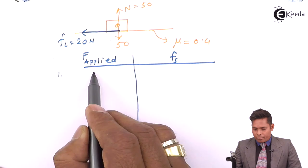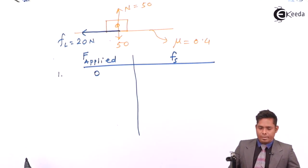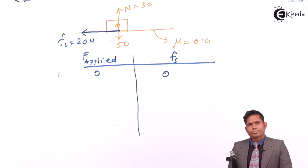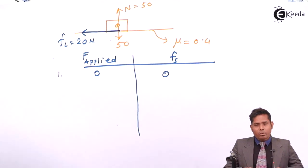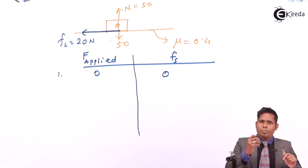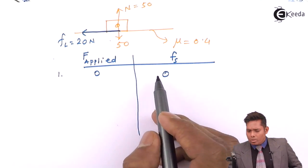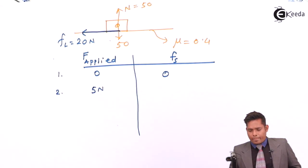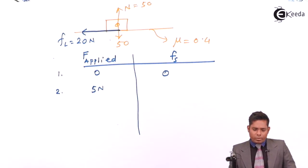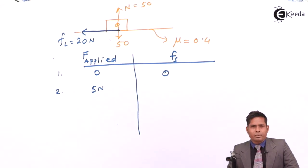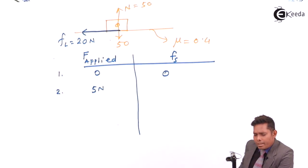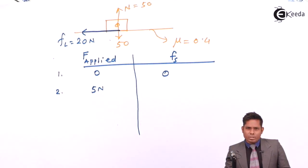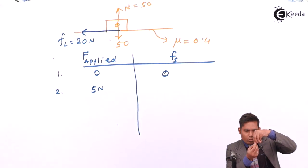If I apply zero force, friction will also be zero — because friction only acts when there is an applied force creating a tendency of motion. If there is no applied force, there is no tendency of motion, no impending motion, and therefore no friction. If the applied force increases to 5 Newton, friction will be 5 Newton.